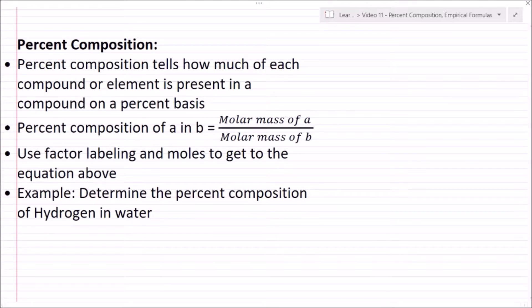Let's start by talking about percent composition. Percent composition tells us how much of each compound or element is present in a compound on a percent basis. So let's say we have some compound b with some element a in it. Our percent composition of a in b is the molar mass of a, which is our element, all over the molar mass of b, which is our compound. To get here, use factor labeling and moles, and then once you have molar mass of a over molar mass of b, you can just plug it into this equation.